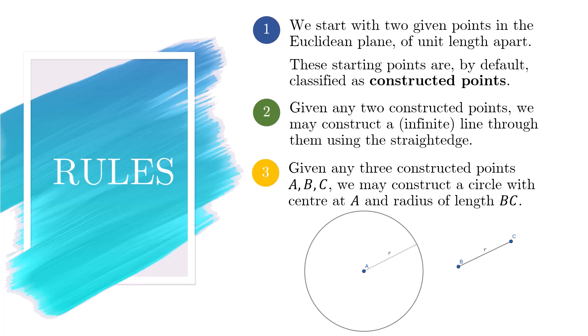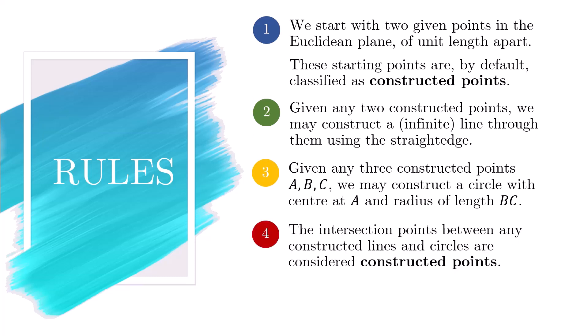Last rule, rule number 4. The intersection points between any constructed lines and circles are considered constructed points. A real number R is said to be constructible if there exist two constructible points of length absolute value of R distance apart.